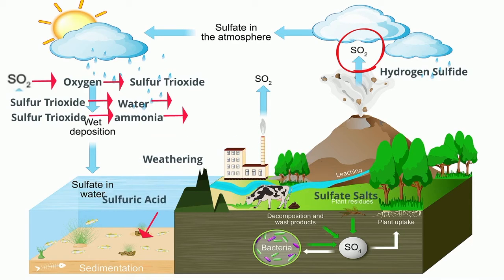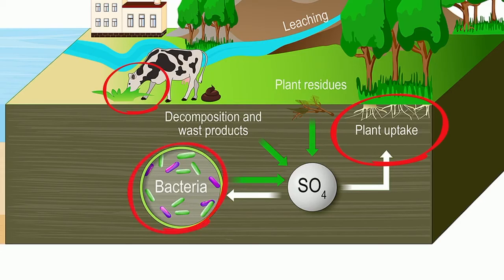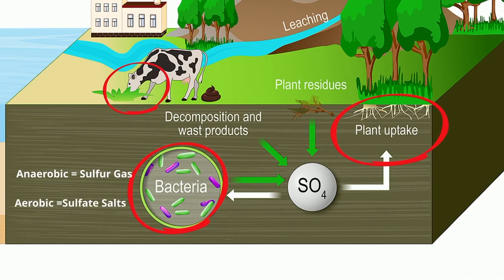The soil absorbs these sulfate salts. Plants then absorb sulfur by taking up the sulfate salts from the soil. Animals in turn get sulfur by eating plants, and they release sulfur when they decay — releasing sulfate salts and hydrogen sulfide. Anaerobic bacteria break down the hydrogen sulfide into sulfur gas, and aerobic bacteria convert the sulfur into sulfate salts, which the plants absorb again.